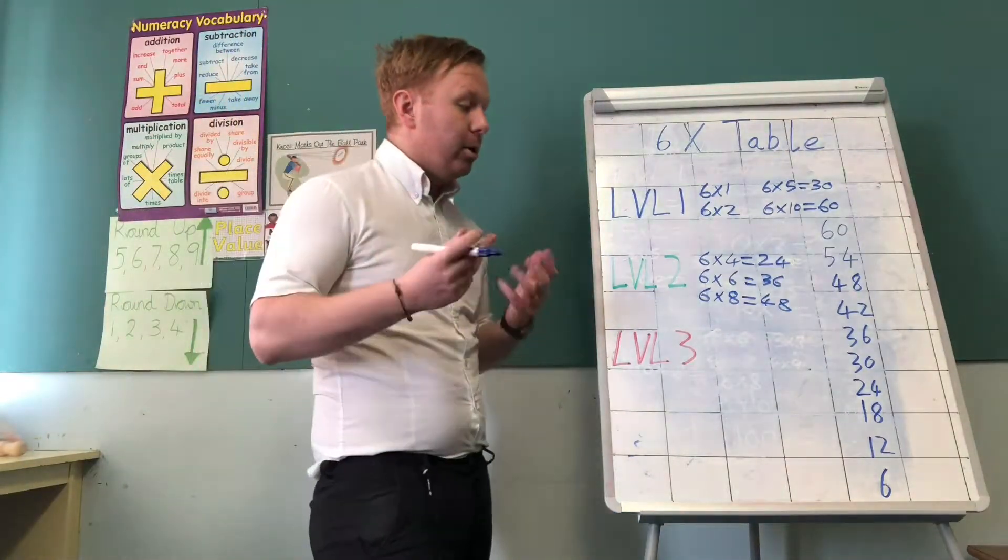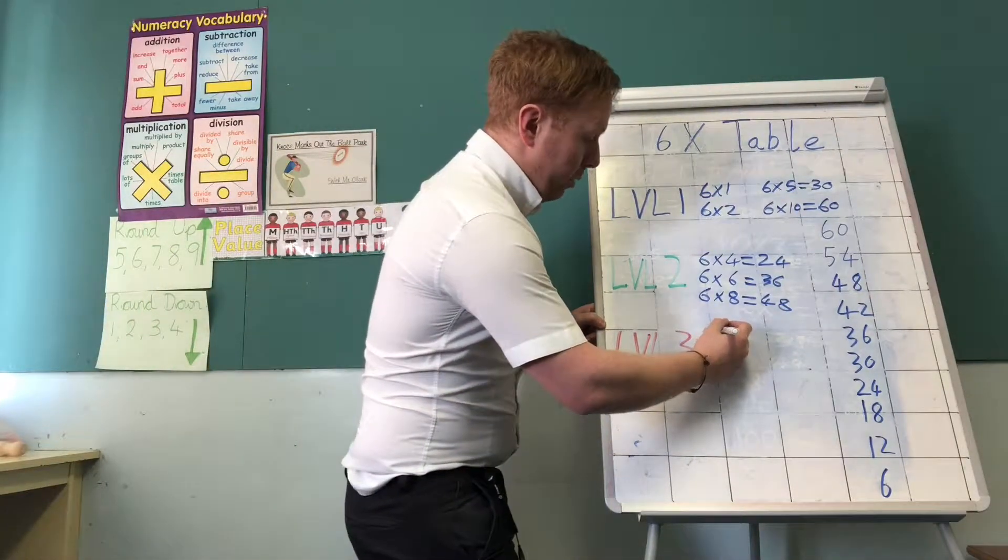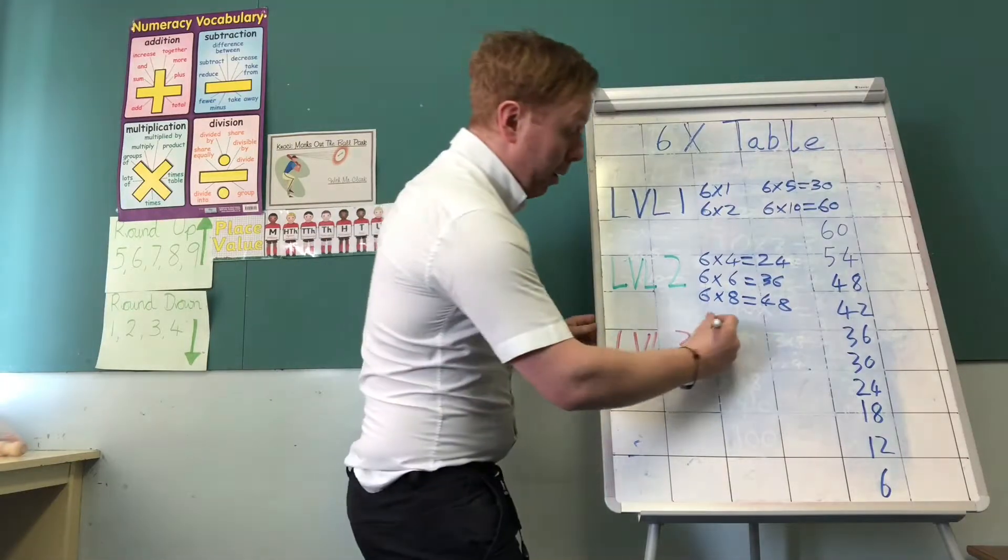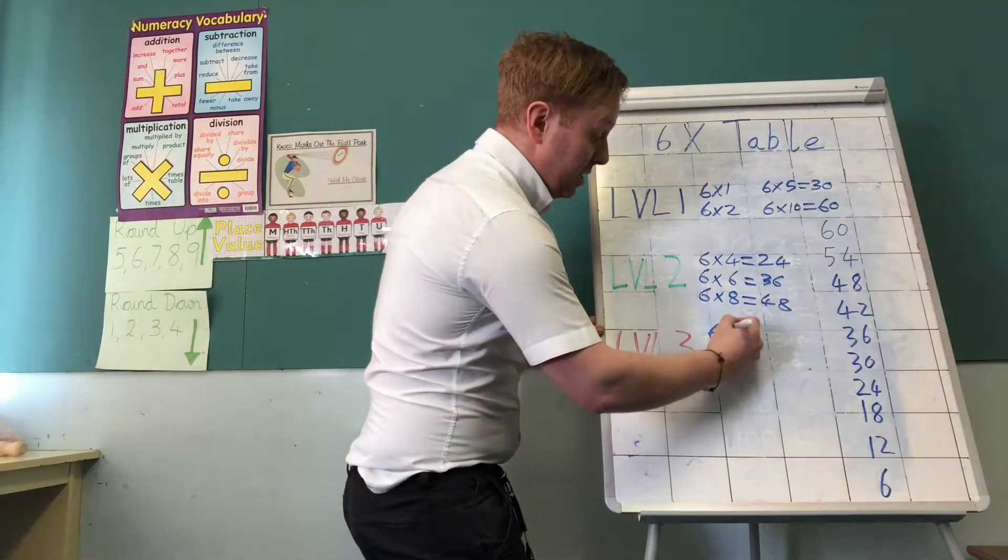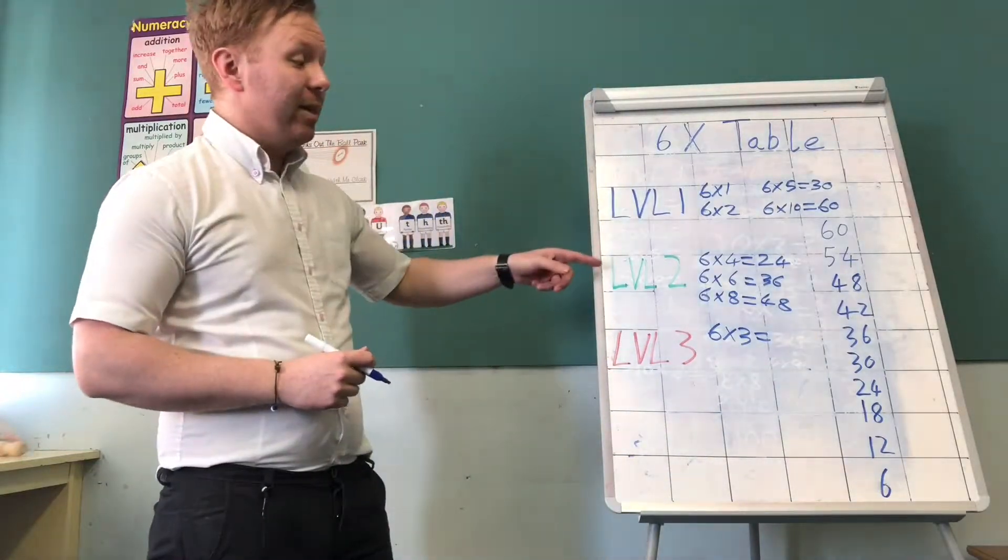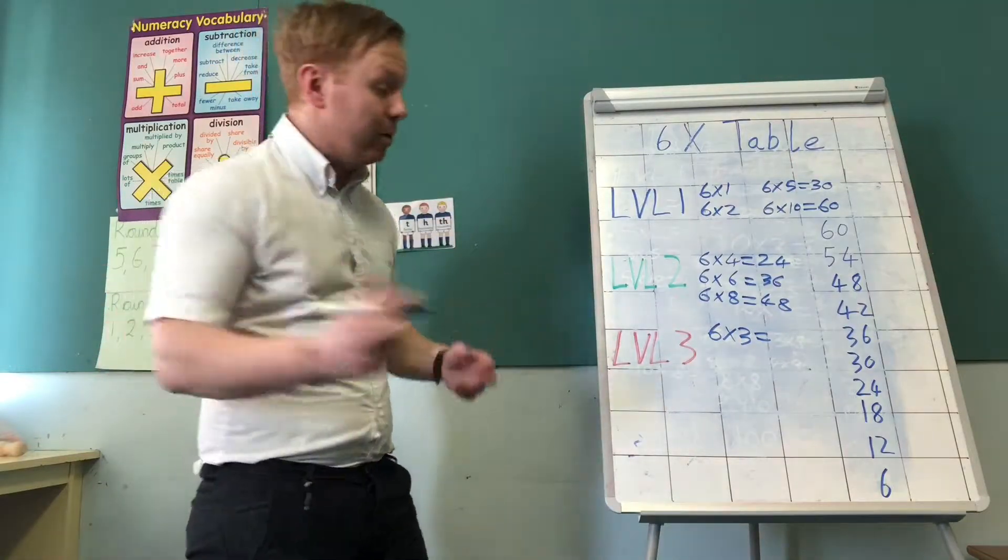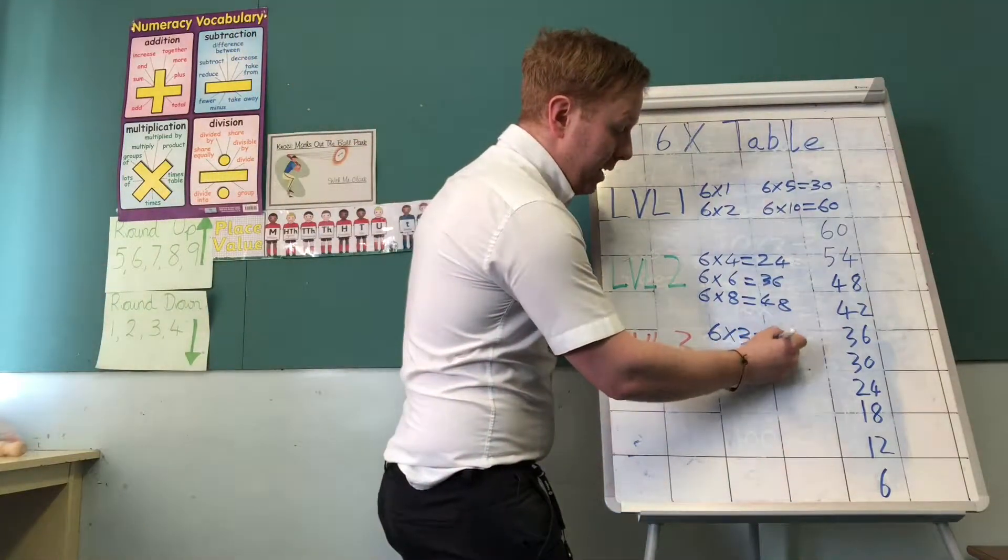Now I come on to the slightly harder questions that we've got left. Some of them you might have expected to come up earlier. But the first one is actually 6 times 3. 6 times 3 could in theory be in that level 2. But I don't like putting too many questions in one go and they're my rhymers. So 6 times 3, you've done your 3 times table. That is 18.